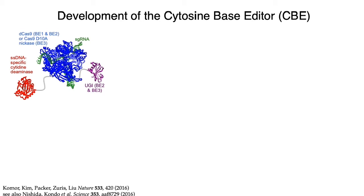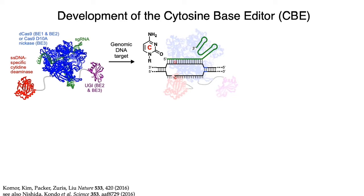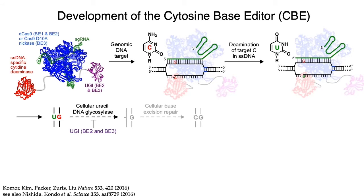Cytosine base editors are fusions of three proteins. First, a catalytically impaired Cas9, shown in blue, which cannot cut the DNA double helix but retains its ability to bind DNA in a guide RNA-programmed manner. Second, a cytidine deaminase enzyme, shown in red, which catalyzes the hydrolytic deamination of cytosine to uracil in single-stranded DNA. And third, a uracil glycosylase inhibitor in purple, which protects the uracil from removal by the cell. In the presence of target DNA, the Cas9 domain opens up the target DNA site and pairs one DNA strand with the guide RNA. The unpaired DNA forms a single-stranded bubble within which all cytosines within about a five-base window are deaminated into uracil, creating a UG mispair. The uracil glycosylase inhibitor domain protects the uracil from base excision repair.